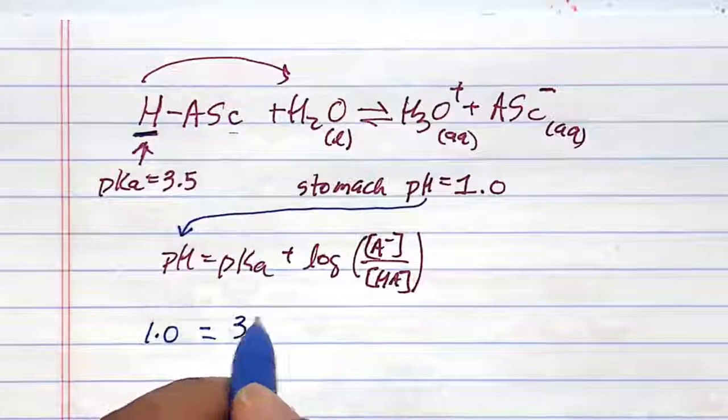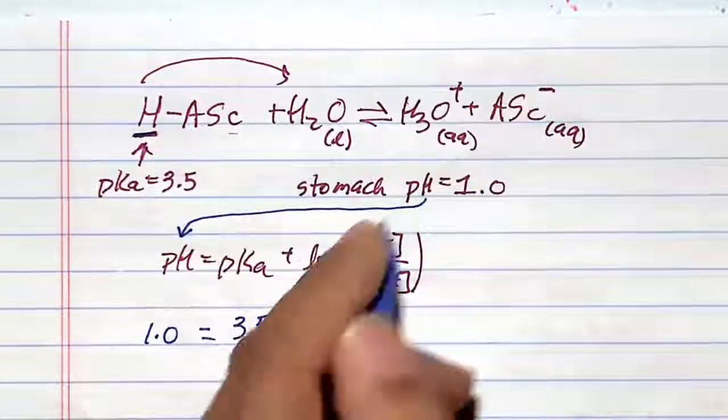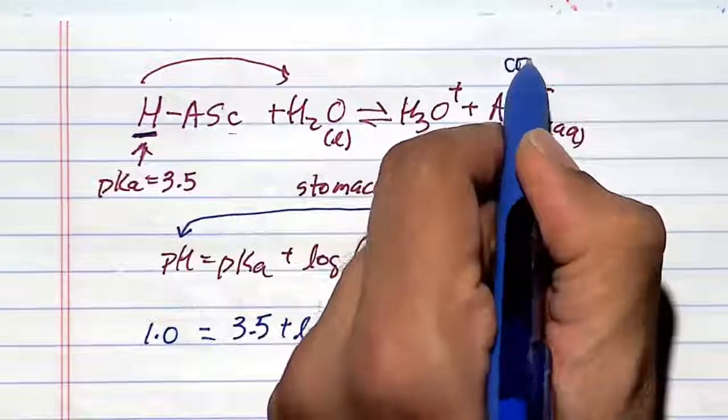The pKa of this proton is given to us at 3.5. And so now we have the log of the conjugate base. This is your conjugate base.